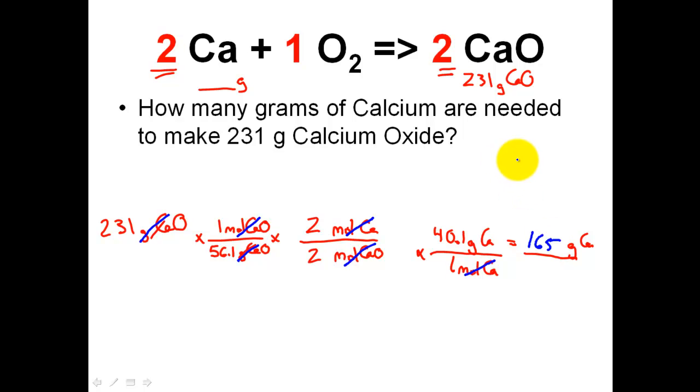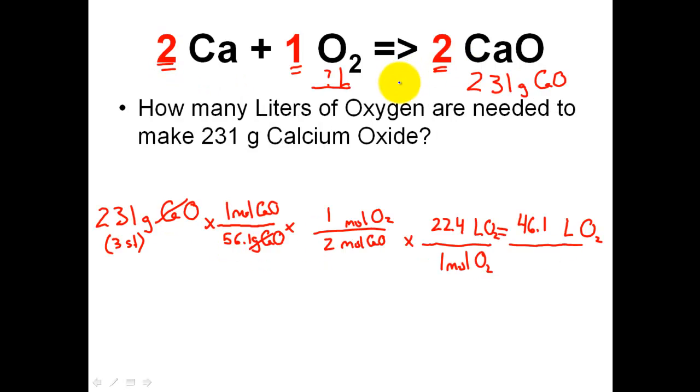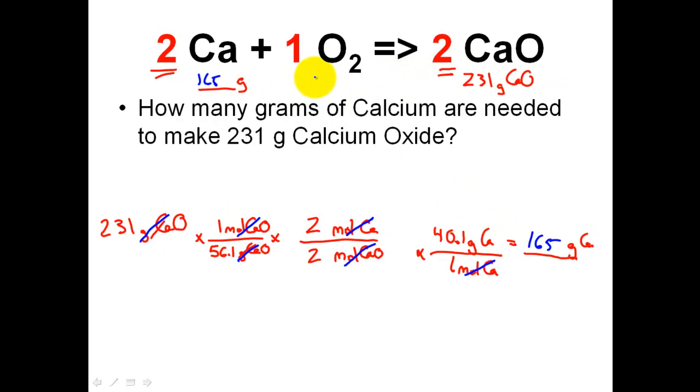And the answer reported to three significant figures is going to be 165 grams of calcium. So right now, I have 165 grams of calcium is needed in order to produce 231 grams of calcium oxide. In addition to the last slide, we saw 46.1 liters of oxygen. Oxygen comes in a gas form. Calcium becomes in a solid form. So 165 grams of solid calcium will react with 46.1 liters of gaseous oxygen to produce 231 grams of calcium oxide.